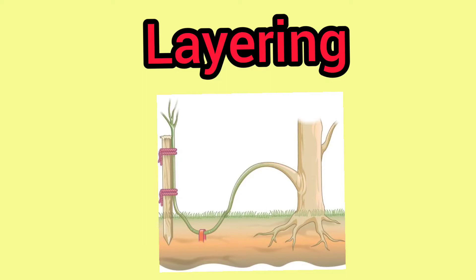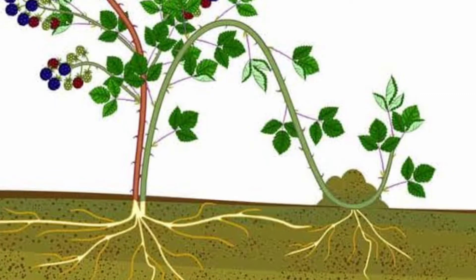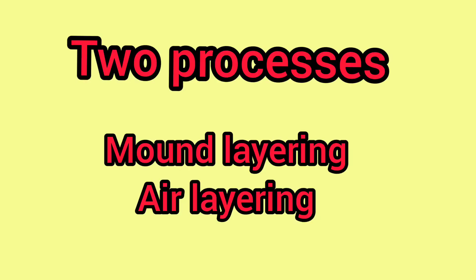Let's start with layering. In this technique, roots are induced on a stem before it is detached from the parent plant. Roots are developed before separating the new plant from the parent. There are two processes of layering: mound layering and air layering.